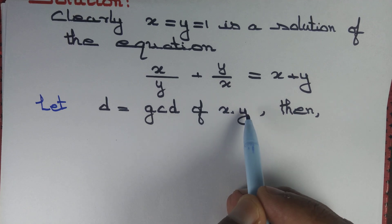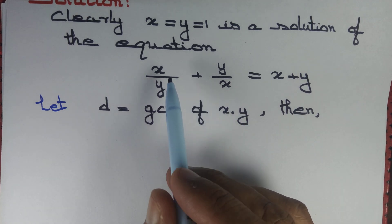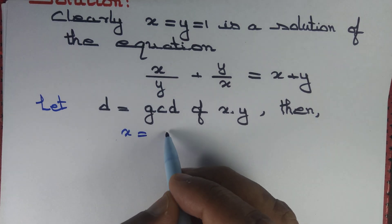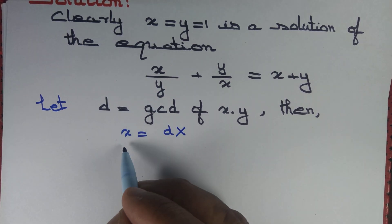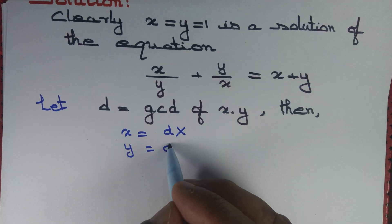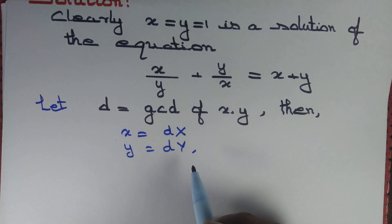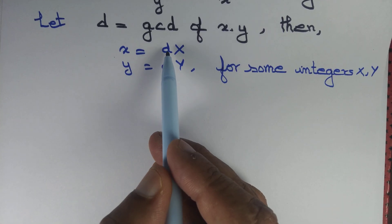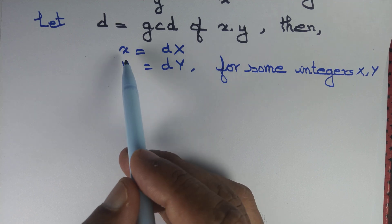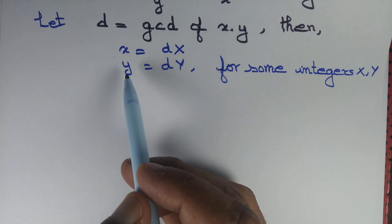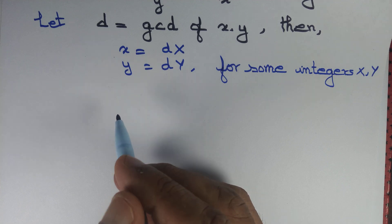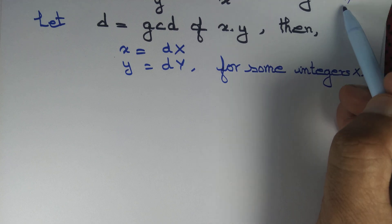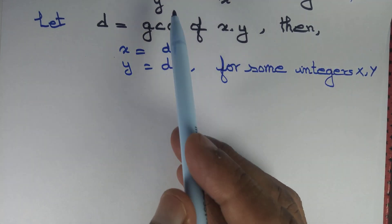d is the gcd of x and y, or highest common factor of x and y. It must be that we can write x = d·X and y = d·Y for some integers X and Y. X is a multiple of d and Y is also a multiple of d, so x = d times some integer and y = d times some integer.